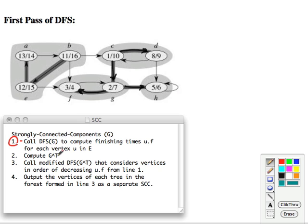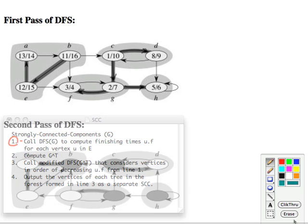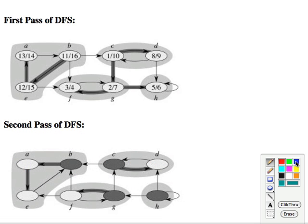Now we're going to compute the G transpose. The transpose graph is the same graph except that all the edges are reversed. This edge going this way now goes that way; this edge going this way now goes that way. In particular, notice that the edge we explored in one direction now can't be explored in that direction — it's going the other way.